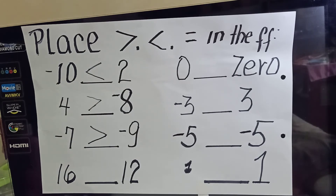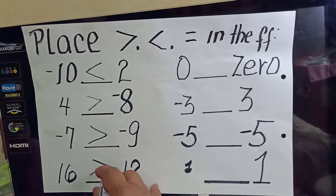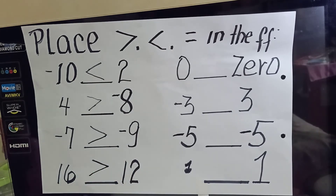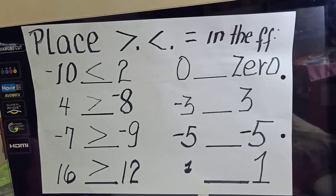How about 16 and 12? Very easy — they are both positive numbers, so you can right away say 16 is greater than 12. Next: 0 written as a symbol and 0 written as a word — what relation exists? As to whether it is written as a symbol or as a word, they mean the same thing.